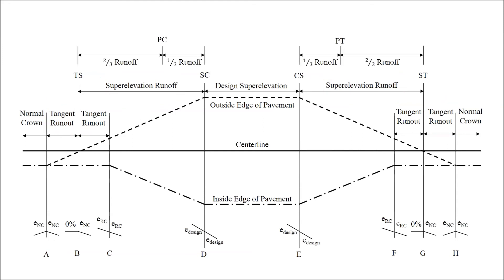If a simple curve is used, the transition from normal crown to the design superelevation must still be provided to allow for the safe travel of drivers. The application of the superelevation transition should apply the majority of the transition prior to reaching the point of curvature. An acceptable practice is to apply two-thirds of the runoff prior to the curve and one-third on the curve.